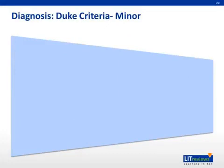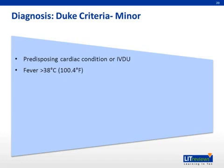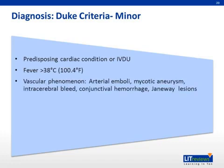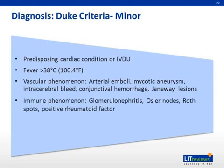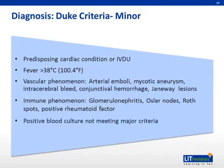Minor criteria include the following. 1. Predisposition, such as a predisposing heart condition or intravenous drug use. 2. Fever greater than or equal to 38 degrees Celsius. 3. One of the vascular phenomena, such as major arterial emboli, septic pulmonary infarcts, mycotic aneurysm, intracranial hemorrhage, conjunctival hemorrhages, or Janeway lesions. 4. One of the immunologic phenomena, such as glomerulonephritis, Osler's nodes, Roth spots, or rheumatoid factor. 5. Microbiologic evidence that does not meet major criteria. 6. Echo that is abnormal but not diagnostic.